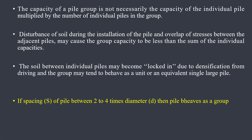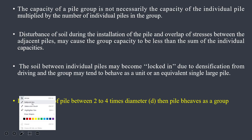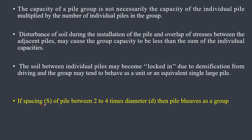When you calculate the bearing capacity of this pile group, you don't calculate the capacity of one pile and multiply it by 10 — that's not how it works. When the spacing of the pile is anything between 2 to 4 times of the diameter of the pile, the pile behaves as a group.